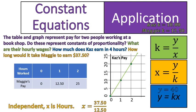And go to the third question. How long would it take Maggie to earn $37.50? You set it up in the equation as you see here. How many hours? We're trying to calculate the number of hours. It is equal to the amount of money divided by the constant which is her constant of $12.50. She would have to work three hours to earn $37.50.